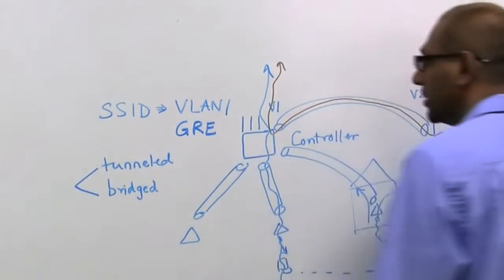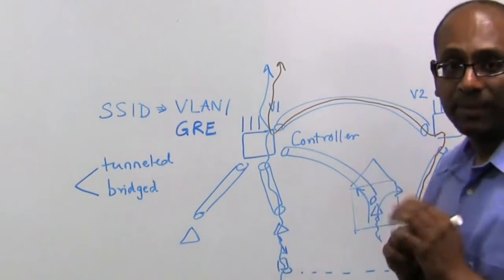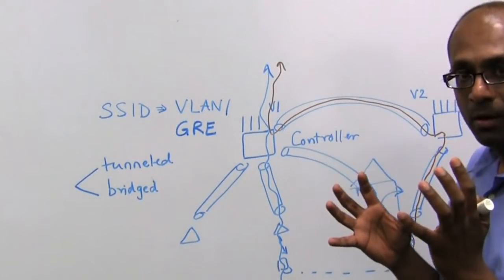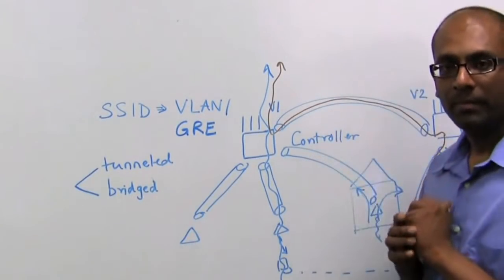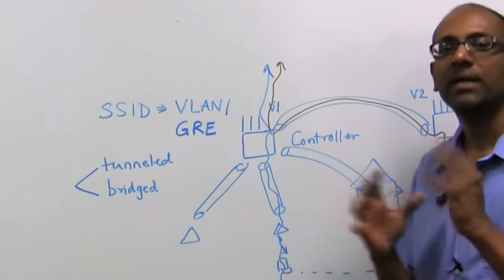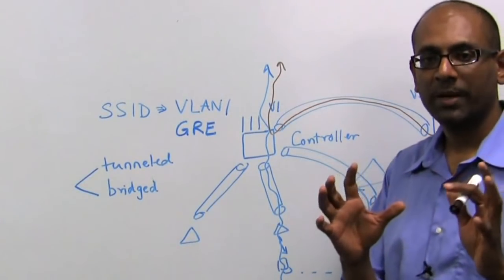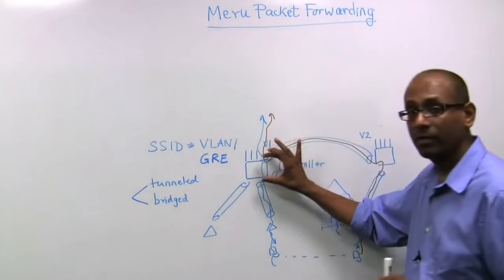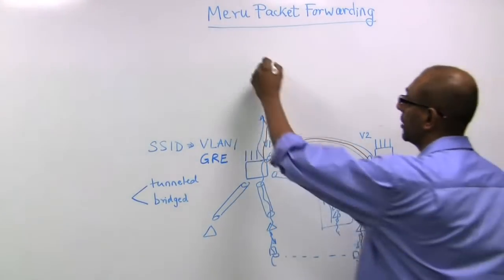So now we're going to conclude this by looking at the last aspect, which is, what is the view from the wired world to all this mobility? And the short answer is, from the wired world perspective, mobility is completely transparent. That's a core behavior of the controllers, and let me explain to you how that works.